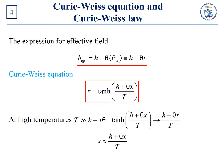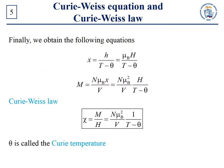Let us find the magnetization and magnetic susceptibility at high temperatures — in other words, when T is much greater than H plus xθ. At high temperatures, the hyperbolic tangent tends to its argument. Therefore, x is approximately equal to (H + xθ) / T. Finally, we obtain for the magnetization and magnetic susceptibility the following expressions. The temperature dependence of magnetic susceptibility is referred to as the Curie-Weiss law.